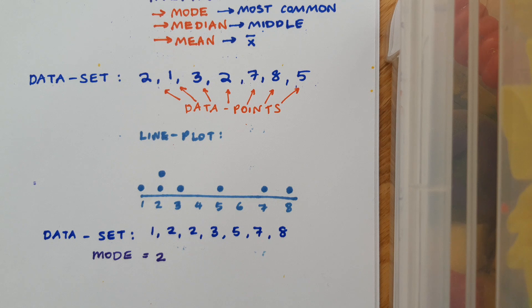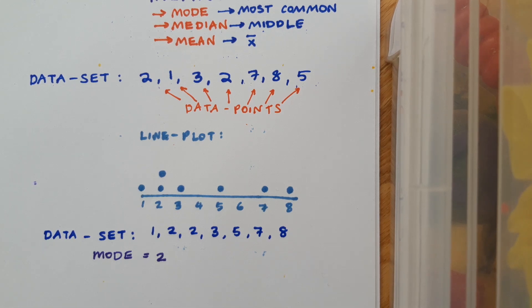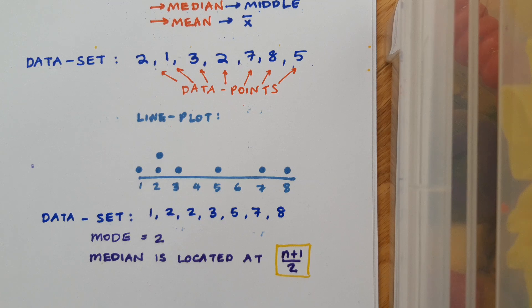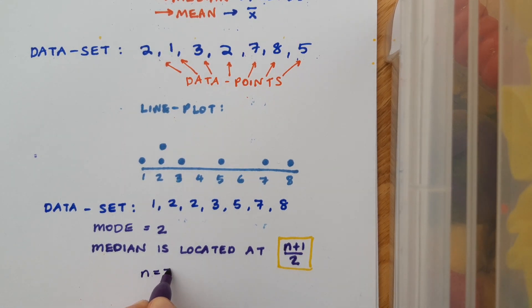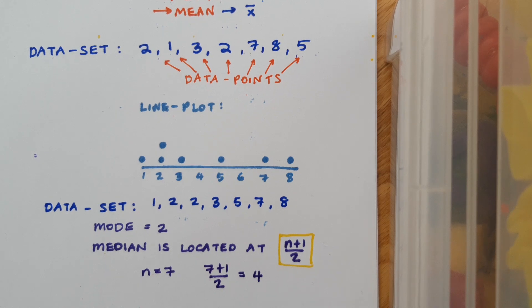Now we're going to calculate the median. The median is the middle of your data, and here it's pretty easy to identify it visually. But sometimes if you have a very big data set, it can be difficult to find the middle. So there's a little trick that we can use to figure out the location of the median. The median is located at n plus 1 over 2. n is the number of data points. So in this case, n is equal to 7. So here, n plus 1 over 2 is 7 plus 1 over 2, which is 4.